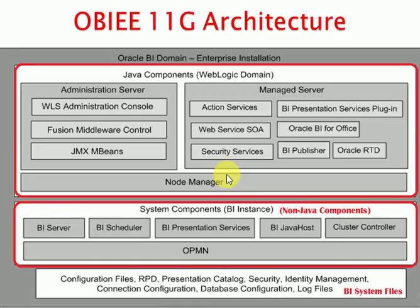A major thing about OBIAE: before 11g, compared with the previous version 10g, we were using the OC4J component. From 11g and 12c, we are using WebLogic Server. It is a middleware component we are using as a WebLogic Server.